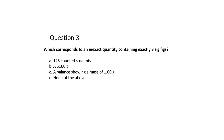Question three: which corresponds to an inexact quantity containing exactly three significant figures? If I count 125 students, this is exact — an exact quantity would have an infinite number of sig figs, not three. If you count an object, that number of sig figs is perfect.